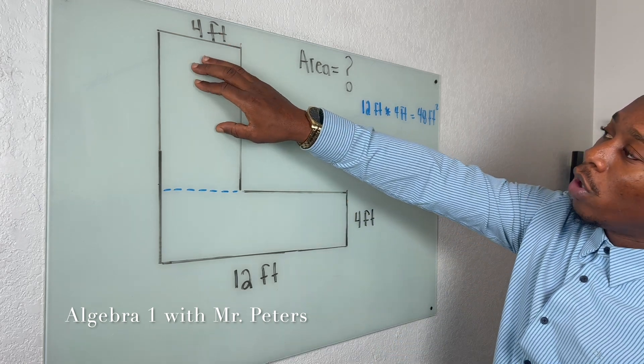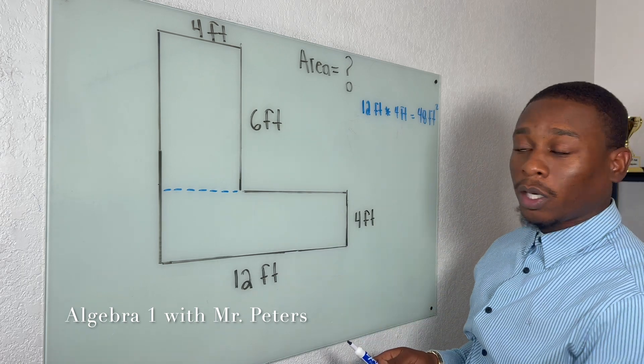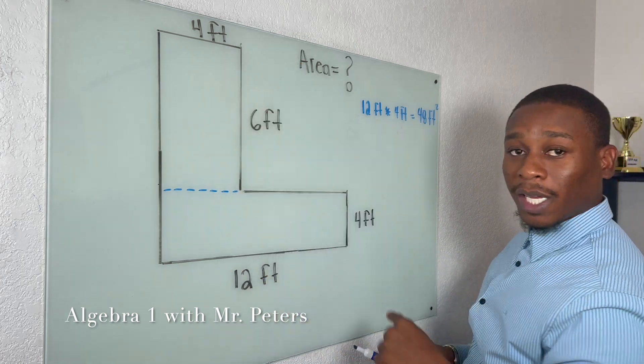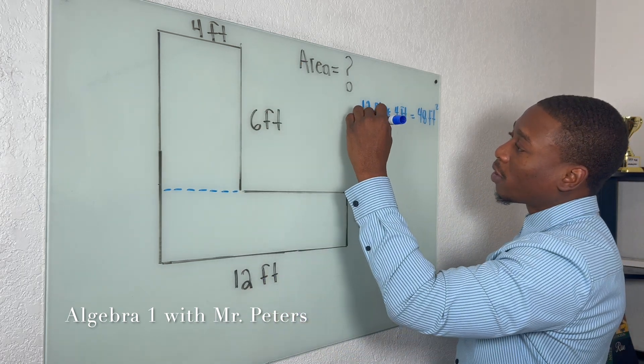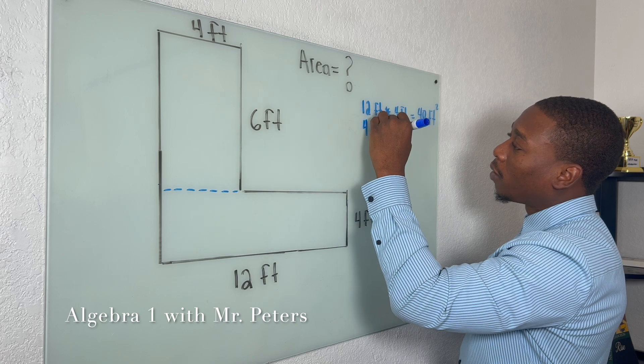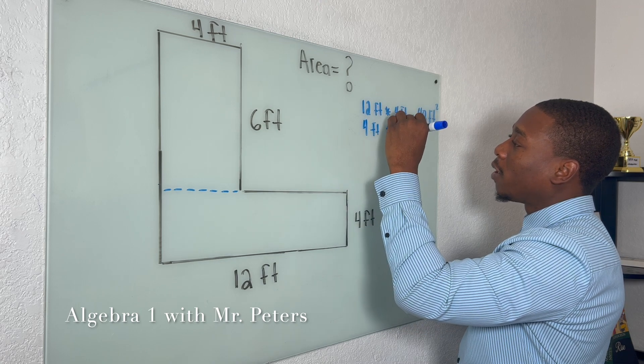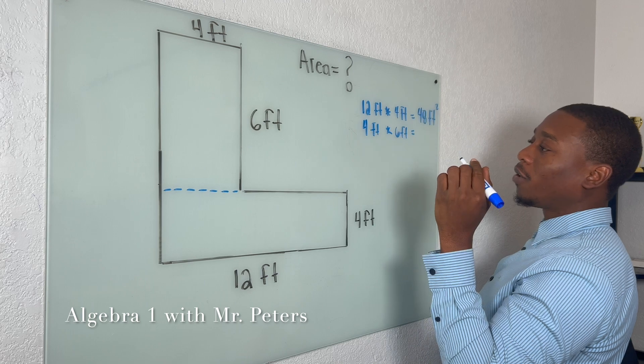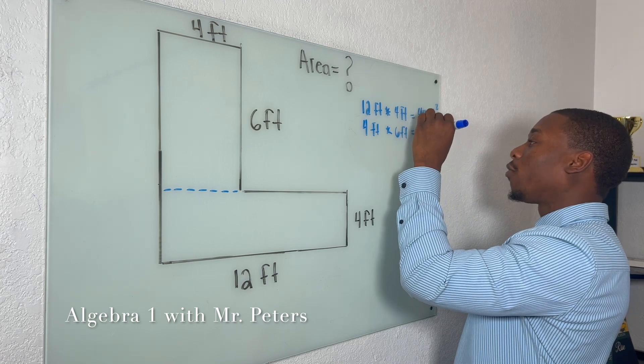Now, when we go to the other one, because the way we cut it, we know we're just doing four times six. So when I fill this in, I'm going to have four feet times six feet, and this is going to give me 24 feet squared.